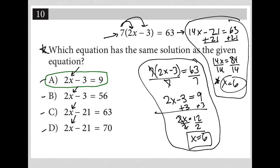It's more work than noticing from the beginning that this 2x minus 3 here looks just like this 2x minus 3, and we can just isolate it by dividing both sides by 7.